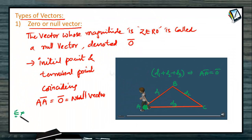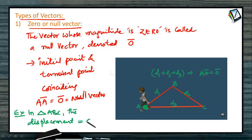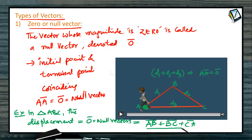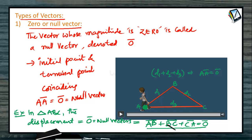We can illustrate this null vector: from A to B is one vector, from B to C is another vector, and C to A is a vector. Therefore, in triangle ABC, AB bar plus BC bar plus CA bar is equal to zero bar, whose magnitude is equal to zero, with some direction. So this is a good example for a zero vector or null vector.